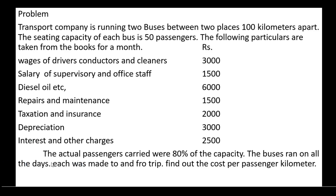The actual passengers carried over 80% of the capacity. Each bus capacity is 50 passengers, but the normal capacity utilized is 80%. We can calculate: the buses ran on all the days, each bus was made to and from trip. Find out the cost per passenger kilometer. Using all this information, we find the cost per passenger kilometer through the preparation of the operating cost statement.